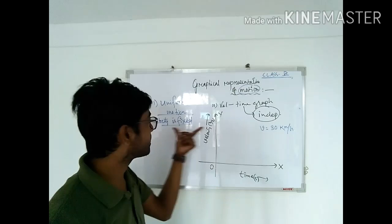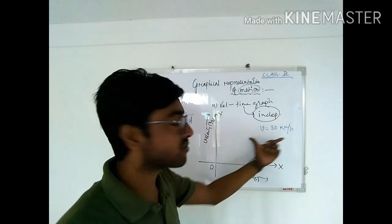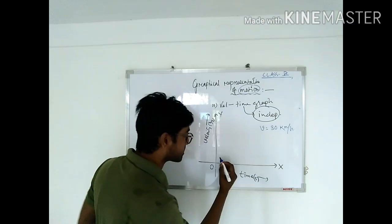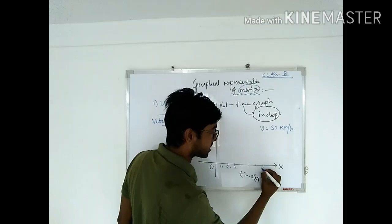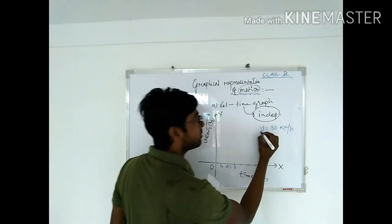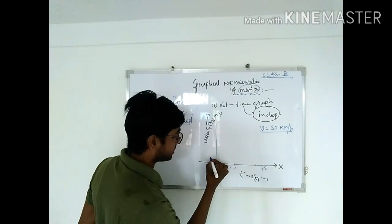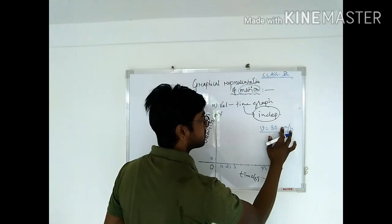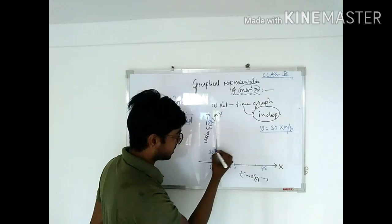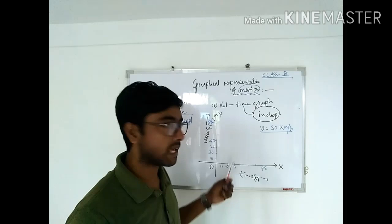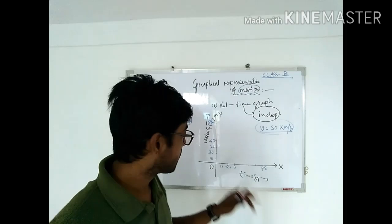Since the car is in uniform motion, its velocity will not change. So if I take times one second, two second, three second, up to seven seconds, at all those times the velocity will be fixed at 30 km/h. Now, to plot: the y-axis has values 10, 20, 30, 40 km/h. After one second, what is the velocity of the car?